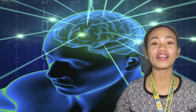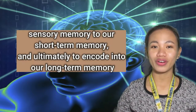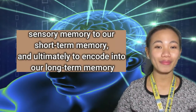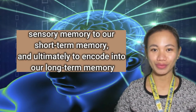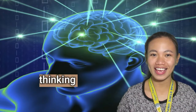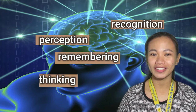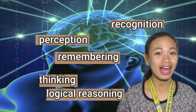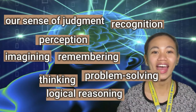Our cognitive processes filter information, deciding what is important enough to save from our sensory memory to our short-term memory and ultimately to encode into our long-term memory. Our cognitive processes include thinking, perception, remembering, recognition, logical reasoning, imagining, problem-solving, our sense of judgment, and planning.